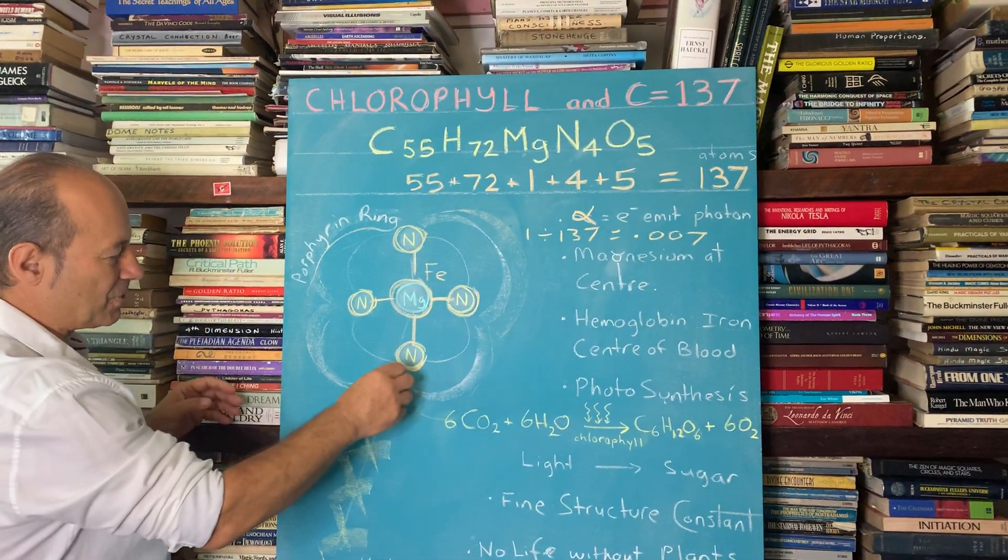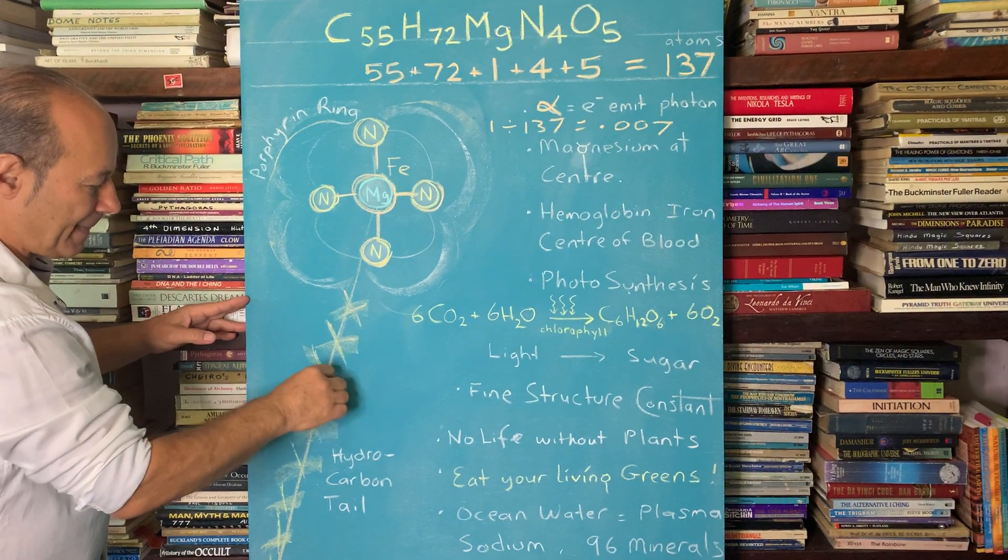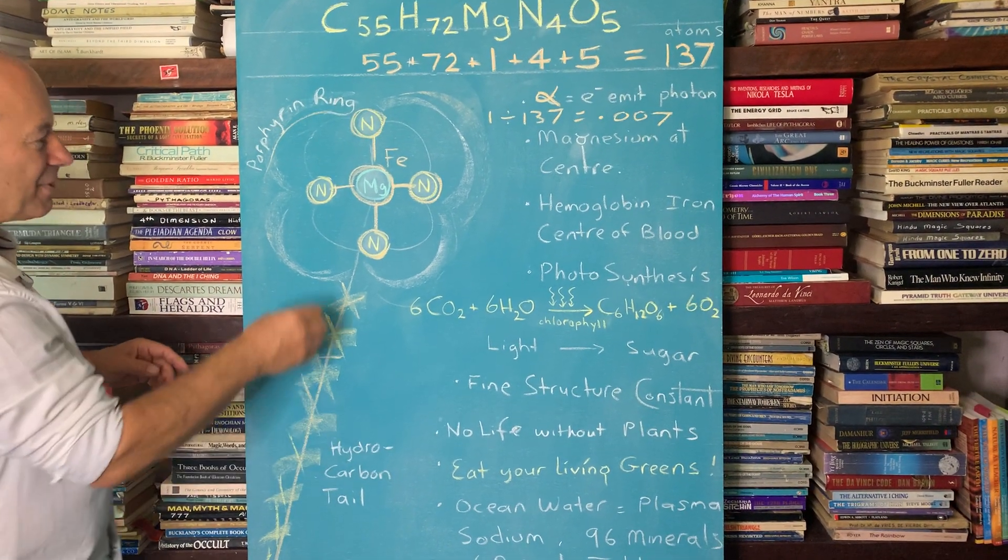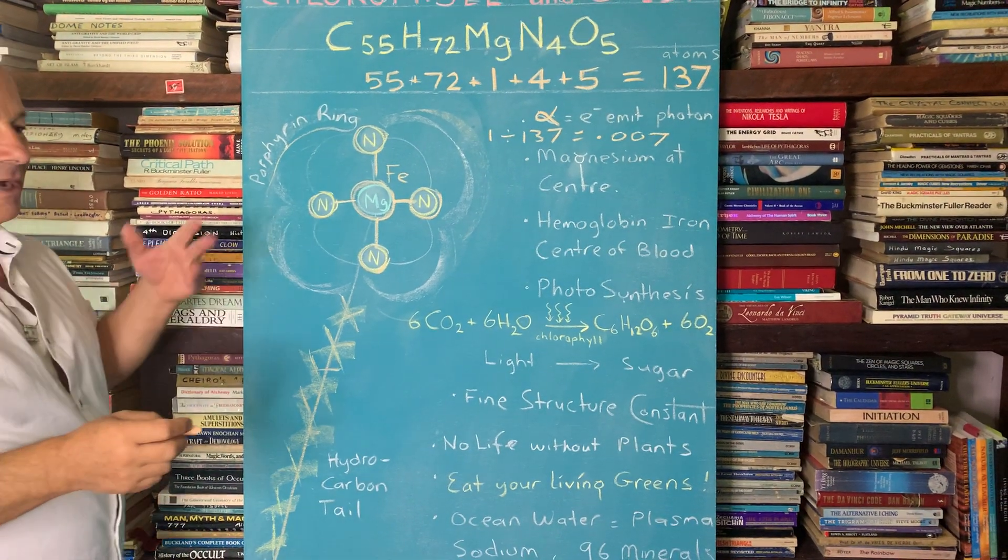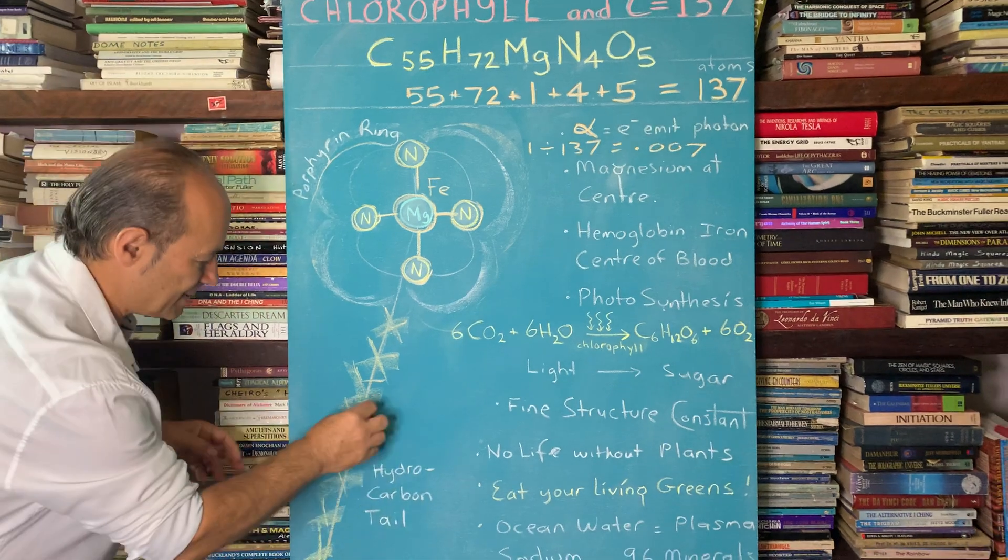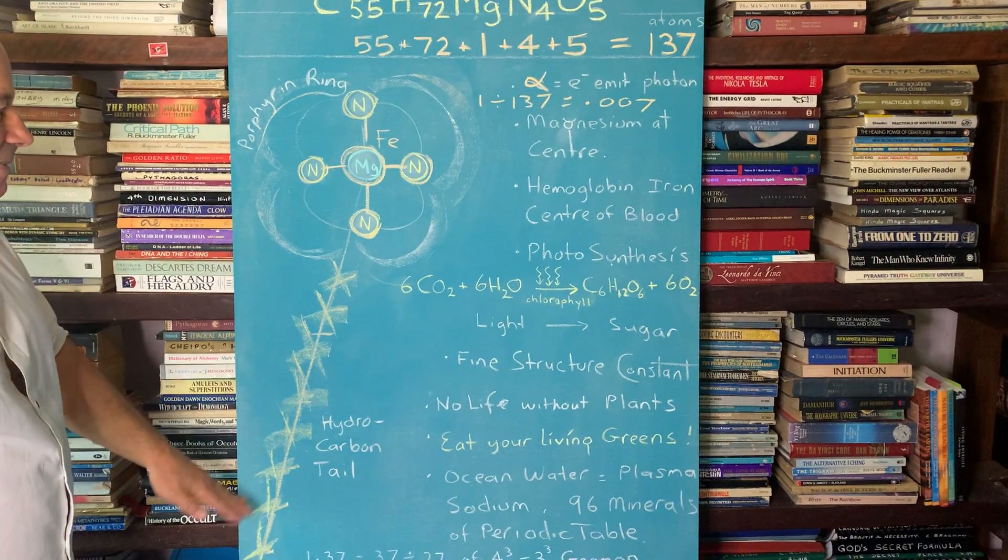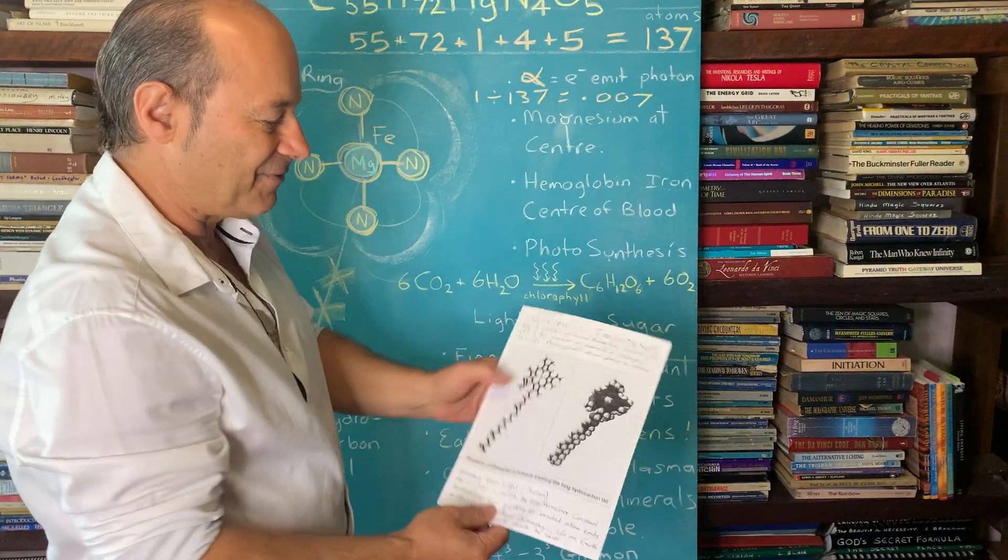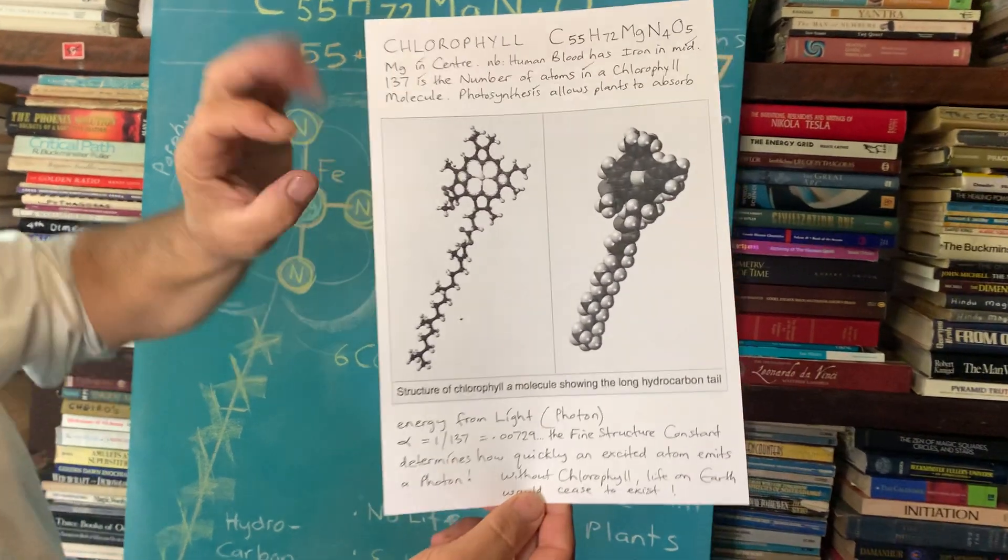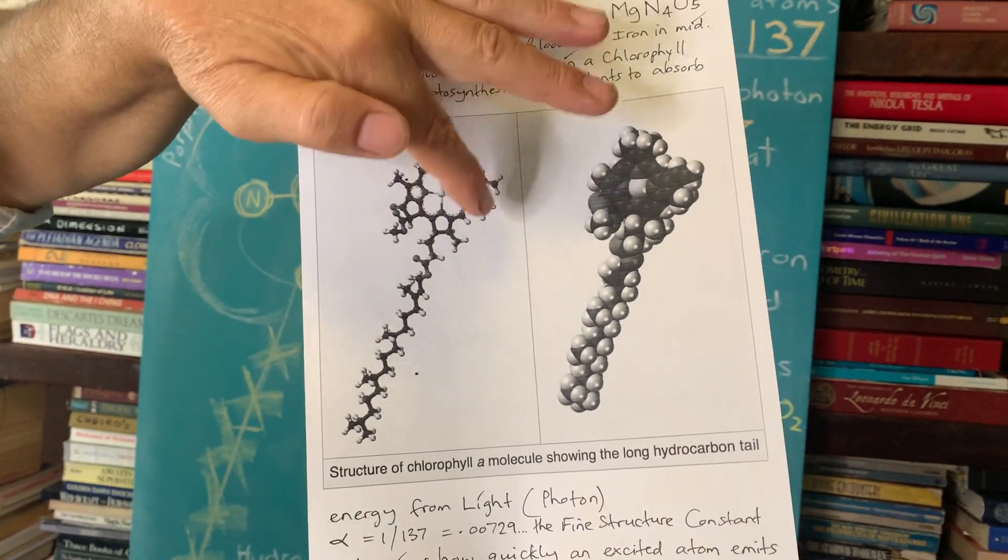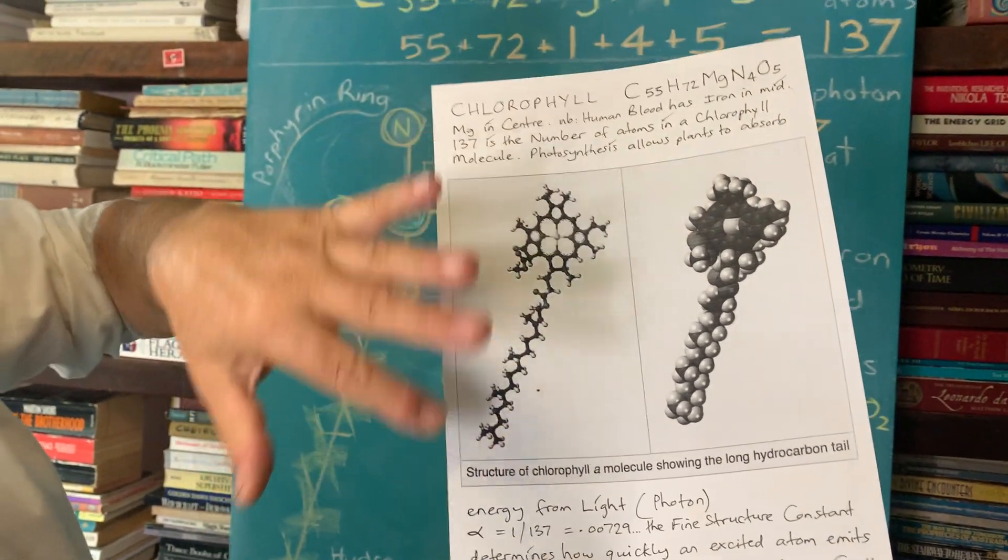And there's a bit more to it because there's this really long tail of what they call a hydrocarbon. Hydrocarbon is when you see C and H together, carbon and hydrogen. And it's this huge like horse tail of hydrocarbons. So I do have a proper picture of it. So if you look at this model of it from the internet, you can see that magnesium is in the centre. There's a cross of nitrogen, the porphyrin ring and the hydrocarbon tail.